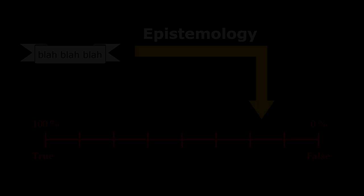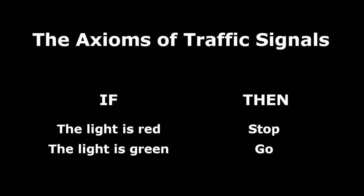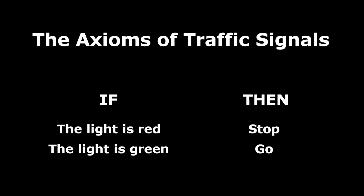For instance, consider a phrase like stop on red, go on green. Phrases such as this are called axiomatic assertions and represent declarations of rules that must be followed in order to engage in some special activity. Axioms are essentially true by default, just so long as they produce consistent outcomes and people can again agree to follow them.